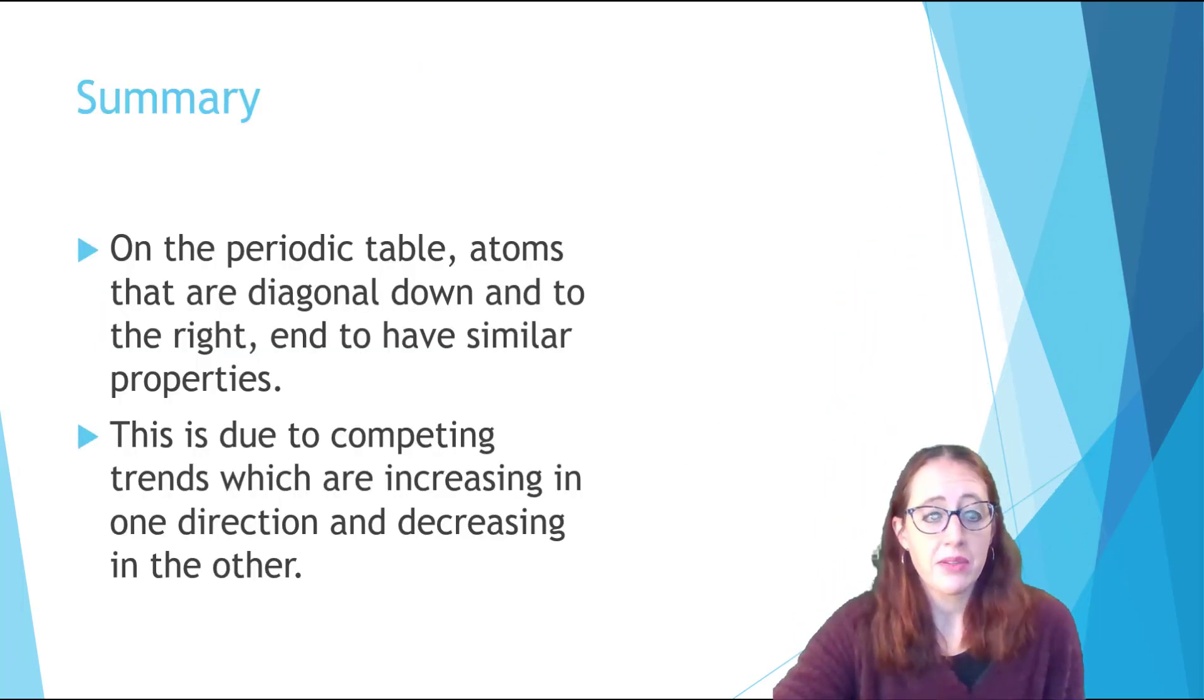We've now talked about how atoms which are on the periodic table on a diagonal going down and to the right end up having similar properties based on the previous periodic trends that we've talked about. This is due to the competing trends from the vertical trend versus the horizontal trend which increases in one direction and decreases in the other.